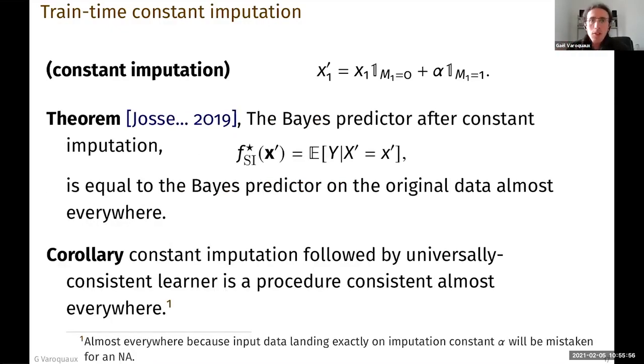Now, given those assumptions, we can show that the Bayes predictor after constant imputation is equal to the Bayes predictor on the original data almost everywhere. So those are almost everywhere the same function.